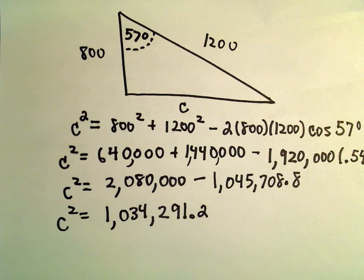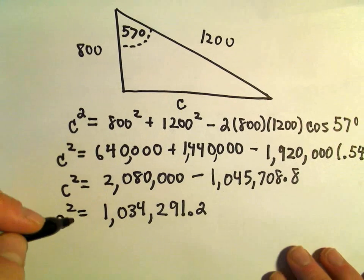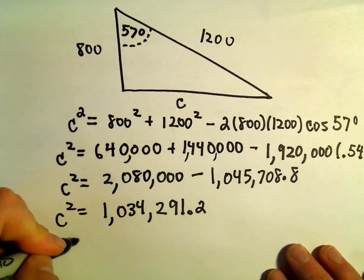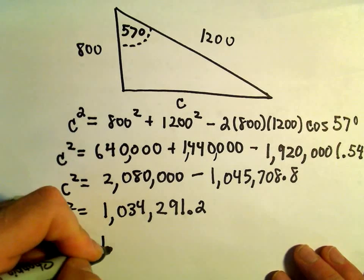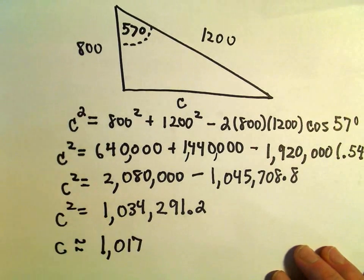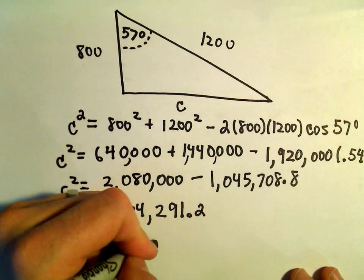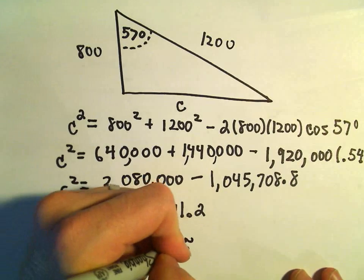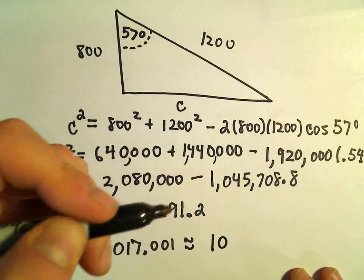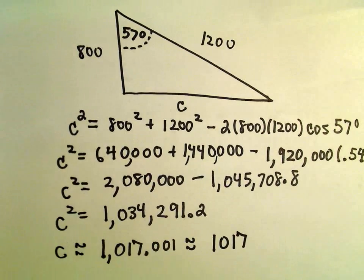So now all we have to do is simply take the square root of this. 1,034,291.2. The square root of that, I'm getting that to be roughly equal to 1,017.